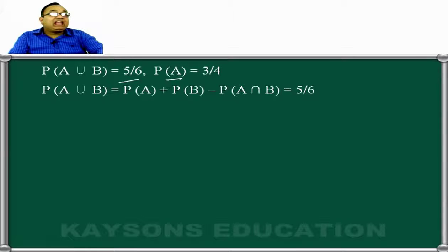Further ahead, P A union B is what? Probability of A plus probability of B minus probability of A intersection B. And what is given to us? This value is 5 by 6.